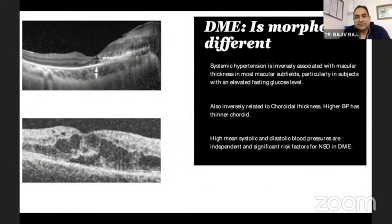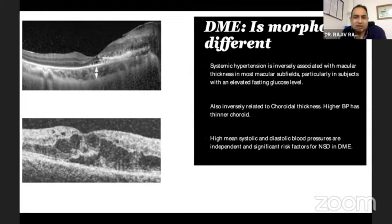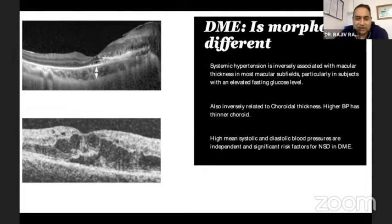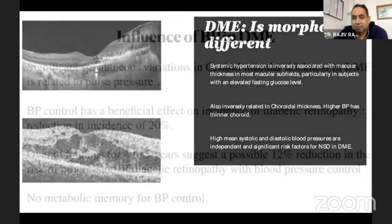Is morphology different in hypertensive DME? Yes, to some extent. Hypertension is inversely associated with macular thickness in the macular subfields, and it's also inversely related to choroidal thickness — people with higher blood pressure have a thinner choroid. In our cohort, we have shown that hypertension is an independent risk factor for neurosensory detachment. So on OCT, if you see NSD, always look at the blood pressure.